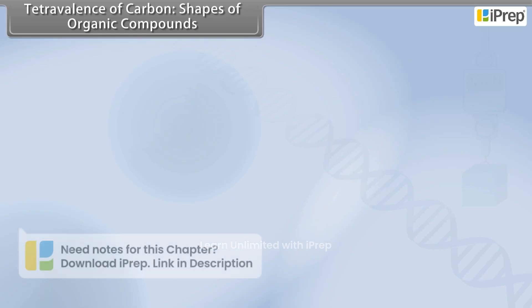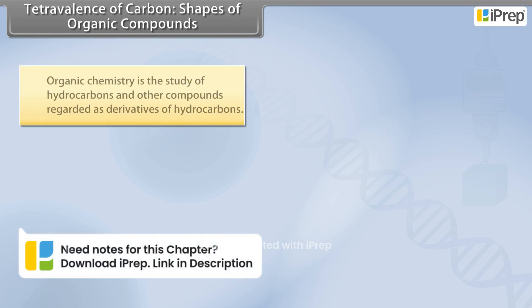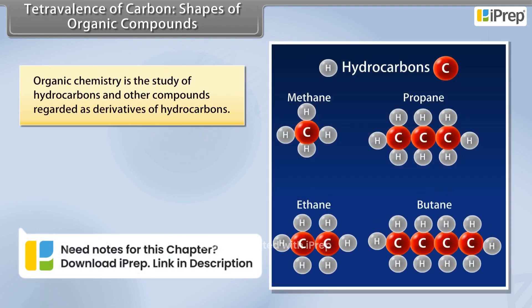Tetravalence of Carbon: Shapes of Organic Compounds. Organic chemistry is the study of hydrocarbons and other compounds regarded as derivatives of hydrocarbons.